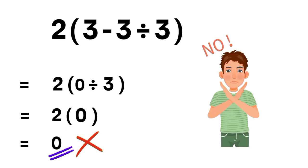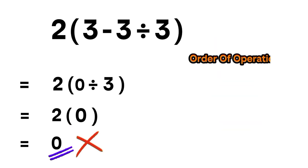But this answer is not correct. Because according to the order of operations, which is PEMDAS, P stands for parentheses, E stands for exponents, M and D stand for multiplication and division, and A and S stand for addition and subtraction.